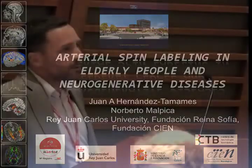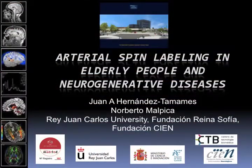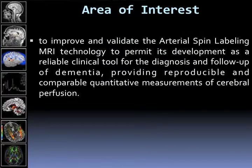I'm going to talk about arterial spin labeling in elderly people and urinary diseases. As I've shown earlier, we work as part of an Alzheimer's center, so we're worried about Alzheimer's and other related dementias in aging population. Our area of interest is to try to improve and validate ASL as a technology to permit its development as a reliable clinical tool for diagnosis and follow-up of dementia.